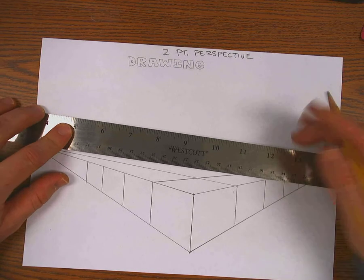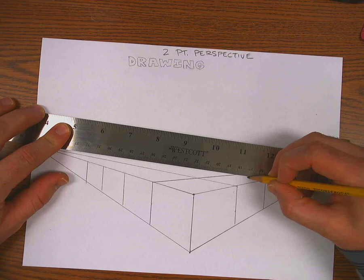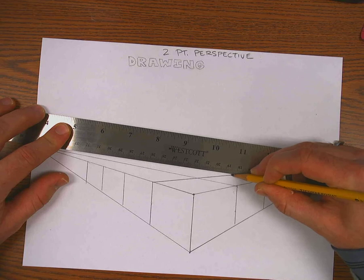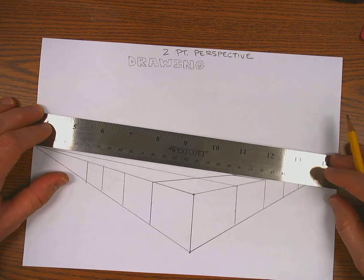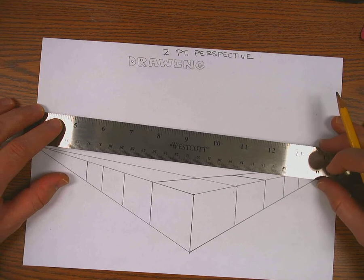Okay, now I'm going to connect the top of all of those vertical lines with the back of the block by drawing towards the vanishing point on the opposite side.